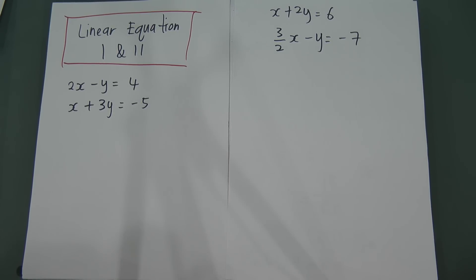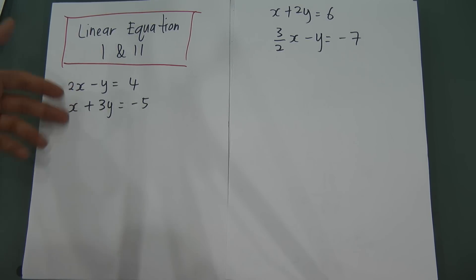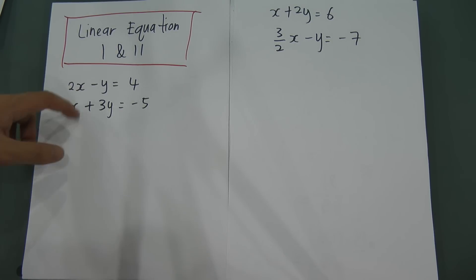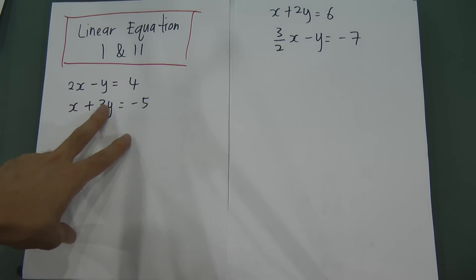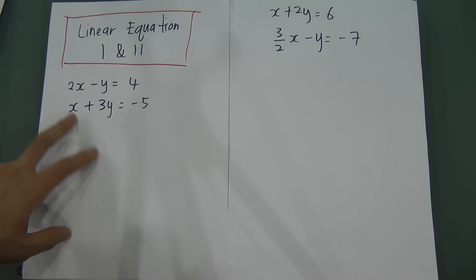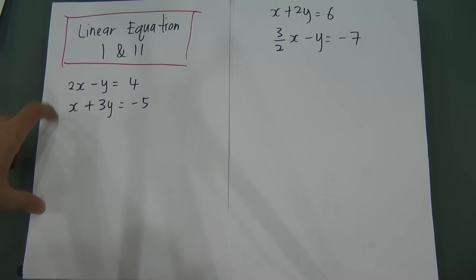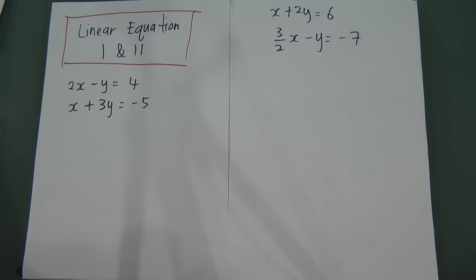The method is called plus and minus, which means you want to delete x or you want to delete y. Some people say you want to eliminate — you want to find the value for x by deleting x. So if I choose to delete x, I have to make sure both equations also have 2x, and then 2x minus 2x will delete x.